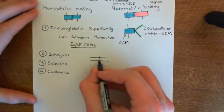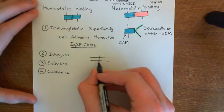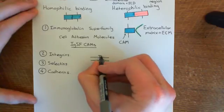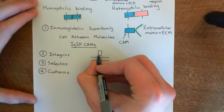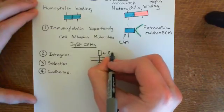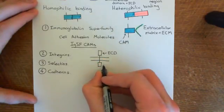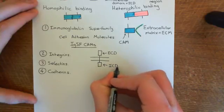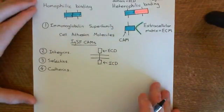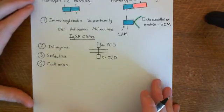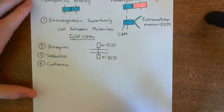A single alpha helix of the polypeptide spans the membrane, with an intracellular domain on the inside and an extracellular domain on the outside. Now let's look at some important examples of these immunoglobulin superfamily cell adhesion molecules.